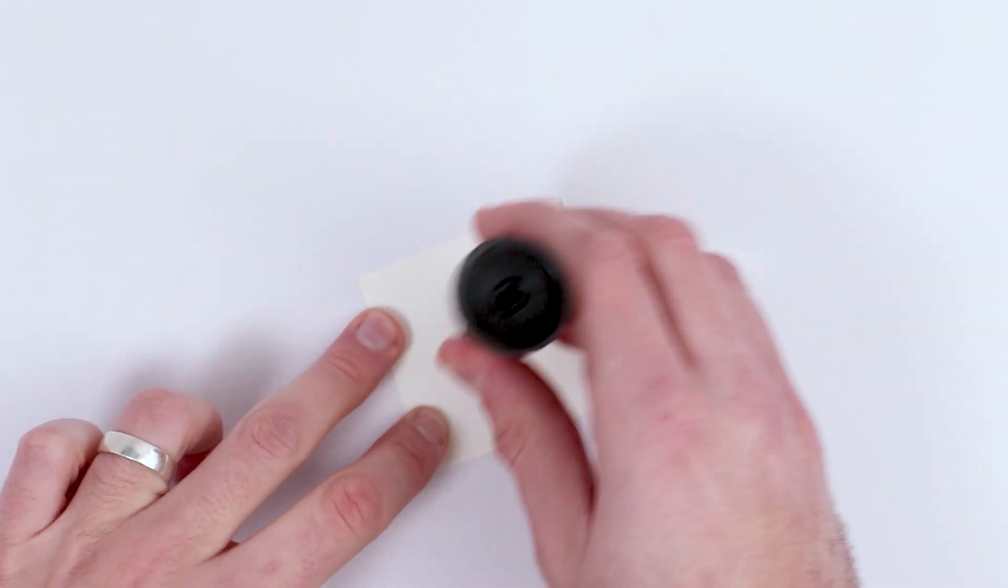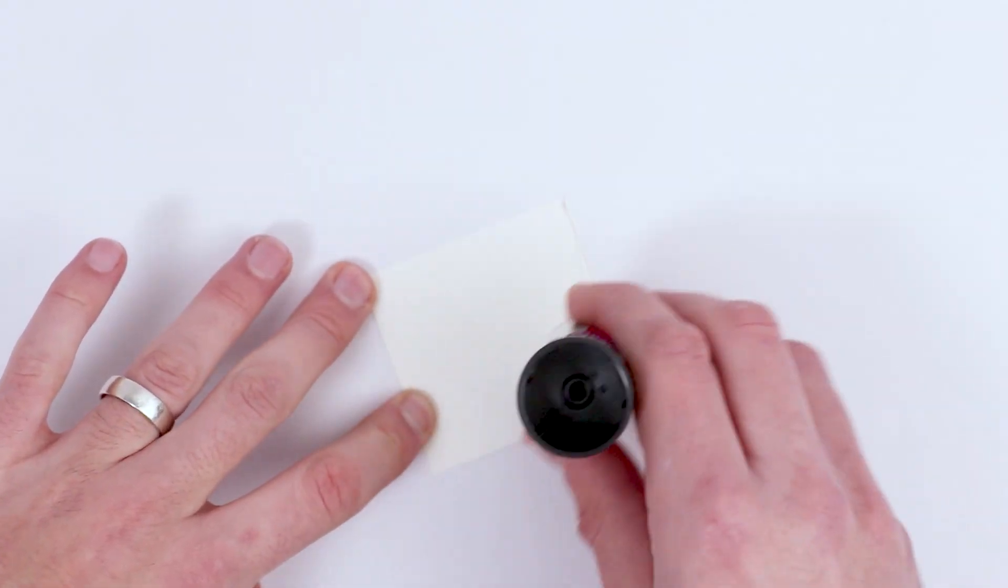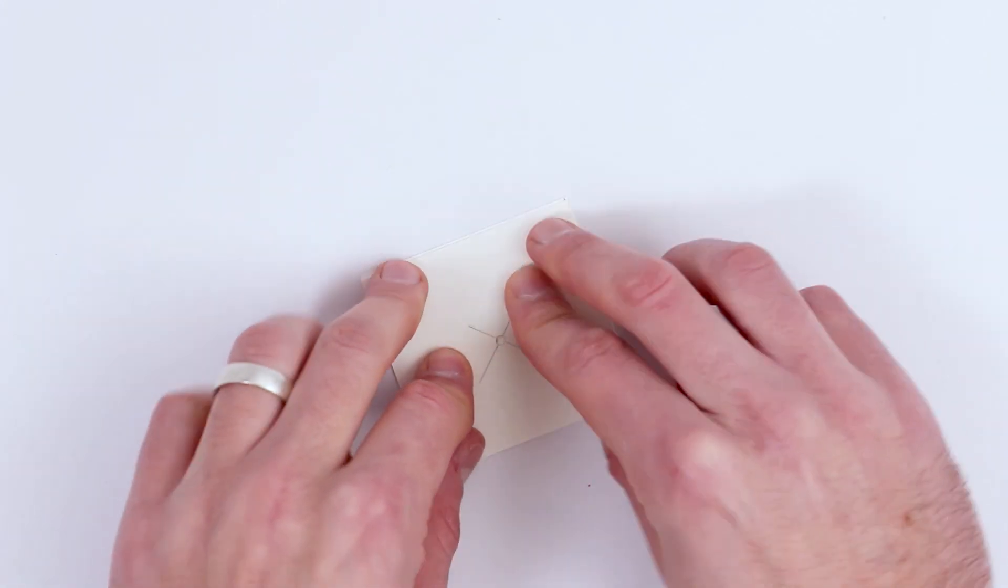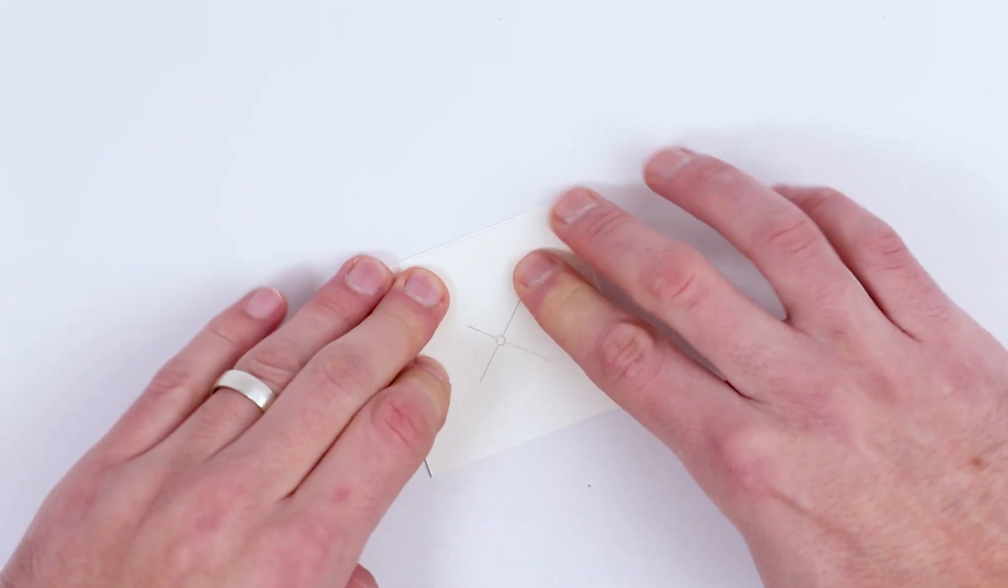Now glue one side of the other piece of card you cut out and glue the piece of card with the hole on, on top. This is what's going to keep the windmill blades stable when they're spinning.